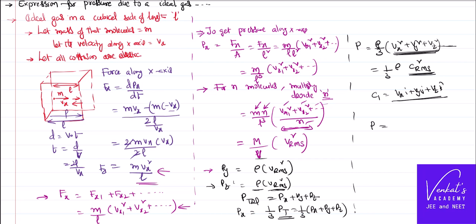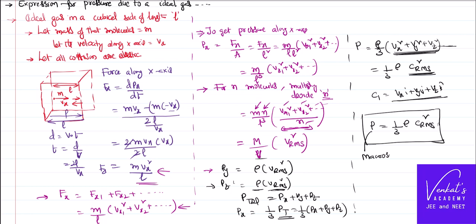Thus we get the final equation: the pressure experienced by a gas molecule is P = (1/3) ρ Vrms², where ρ is the density and Vrms is the root mean square velocity. This is the pressure derived using the kinetic theory of gases — a macroscopic property expressed in terms of microscopic properties of gas molecules. In further videos we will discuss pressure-temperature relations and kinetic energy relations.